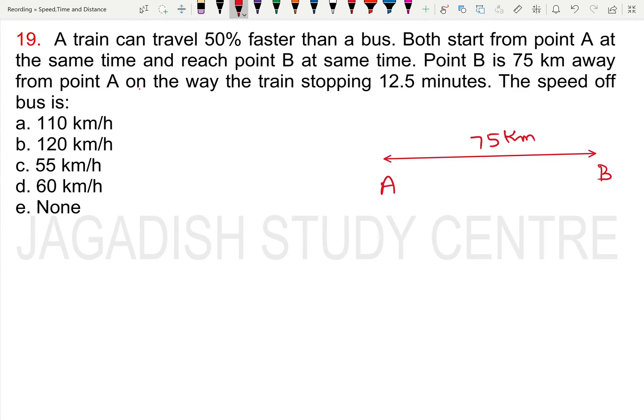Here, a train and a bus start from point A at the same time and reach point B at the same time. The distance from A to B is 75 km. The train and the bus arrive at point B at the same time.